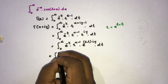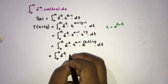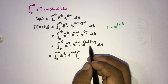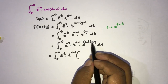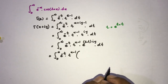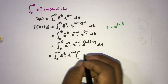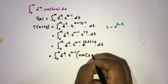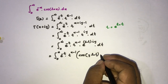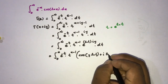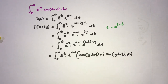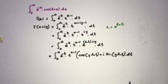So we have the integral from zero to infinity of e to the minus t times t to the x minus 1 times e to the natural log of t times iy. We can apply Euler's formula to write this as cosine of y times natural log of t, plus i times sine of y times natural log of t, all times dt.